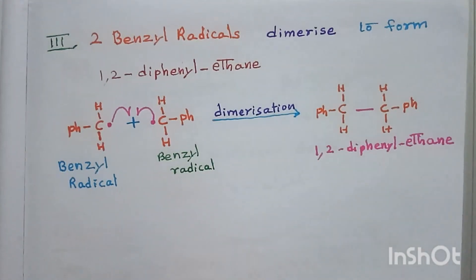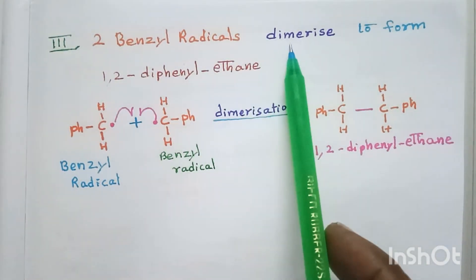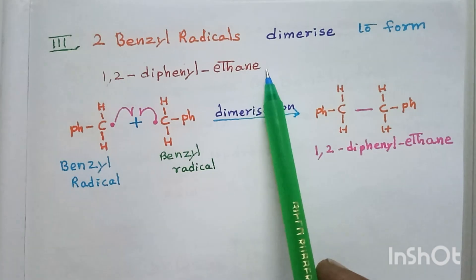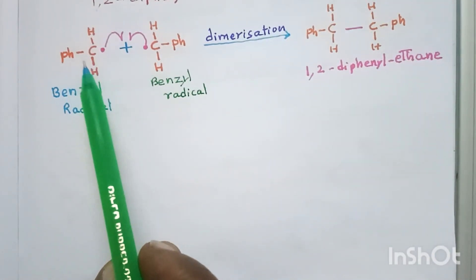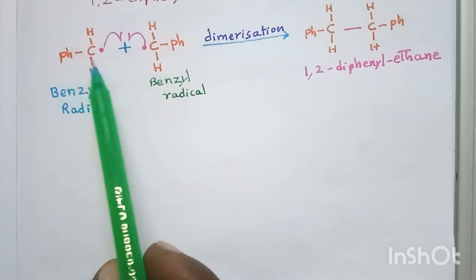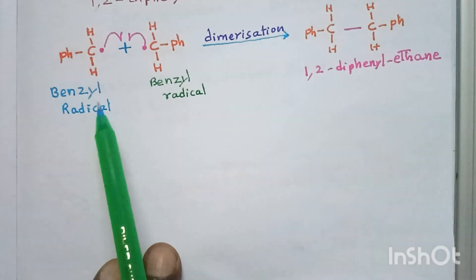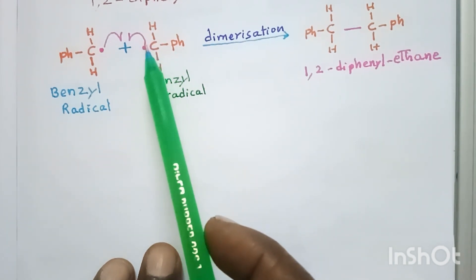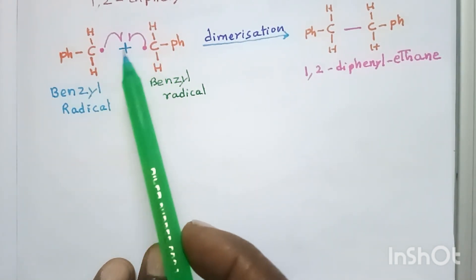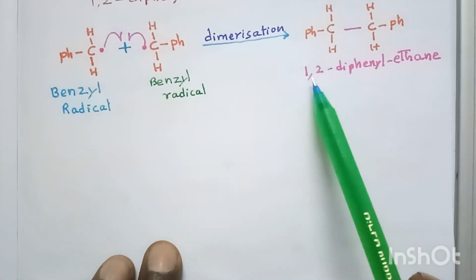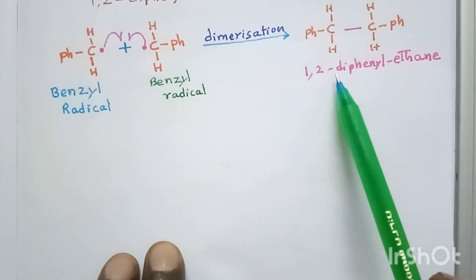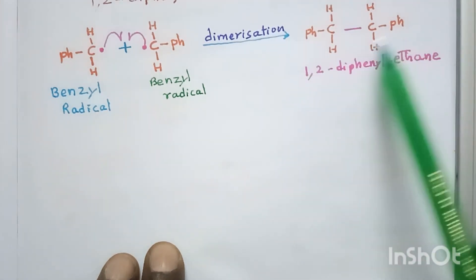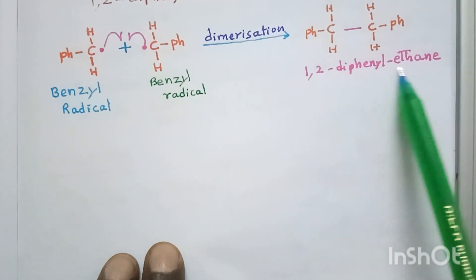The third possibility is that two benzyl radicals (C₆H₅–CH₂•) dimerize or combine to form a new bond, giving 1,2-diphenylethane: C₆H₅–CH₂–CH₂–C₆H₅. This is the third product.